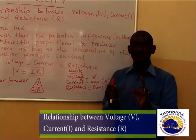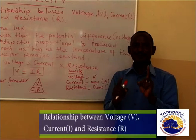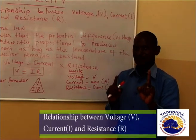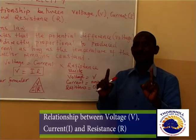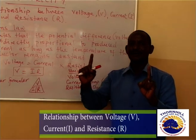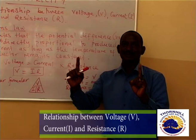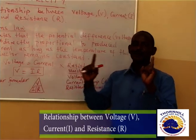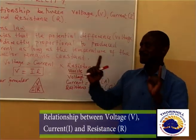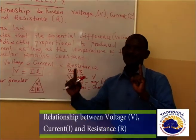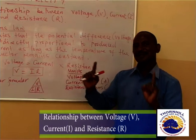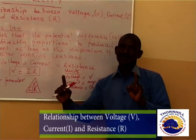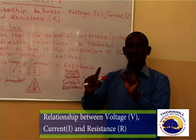If you are going to produce one volt, then you are going to have one amp of current. Two volts gives two amps. Three volts gives three amps. That's direct proportion.